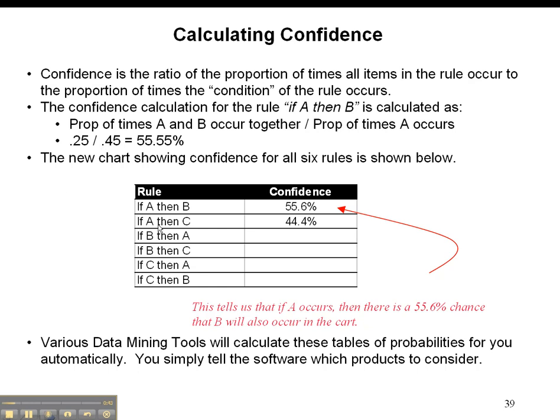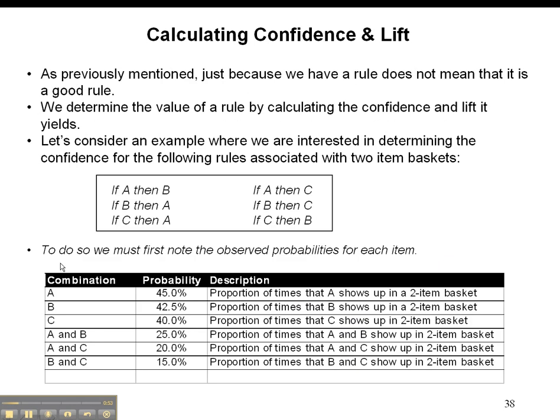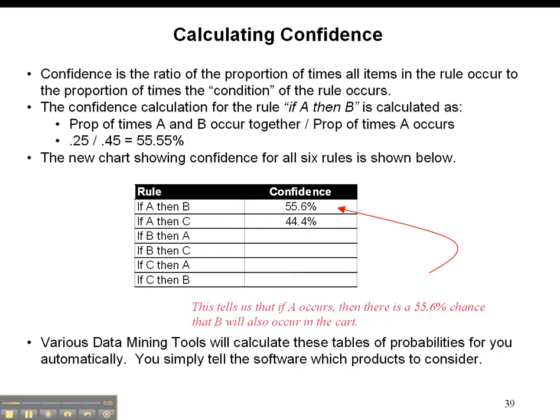If A then C, what is the probability that C will be in the cart if A is already in there? That's going to be the proportion of times that A and C are in the cart together, which if you remember is 20%, divided by the proportion of times that A is in there, which is 45%, which if you work that out you'll get 44.6%, and then you can fill in the rest of those.